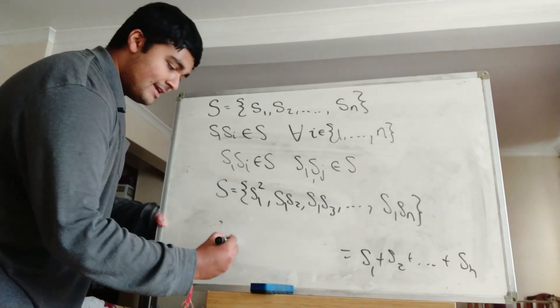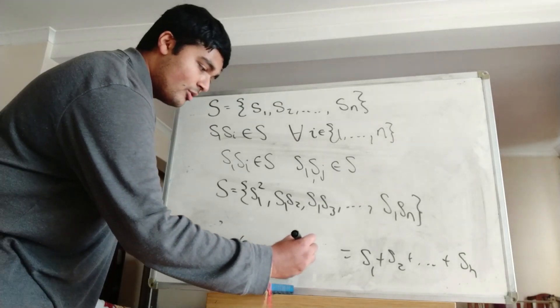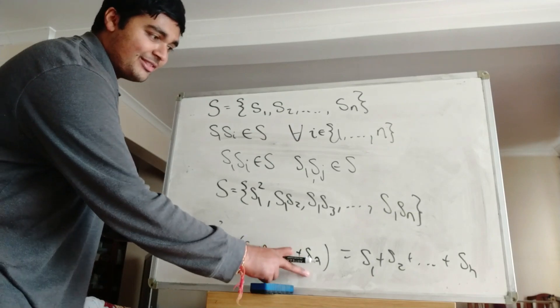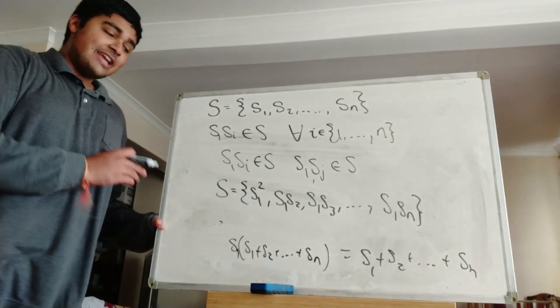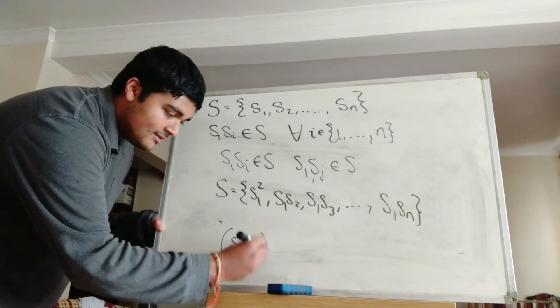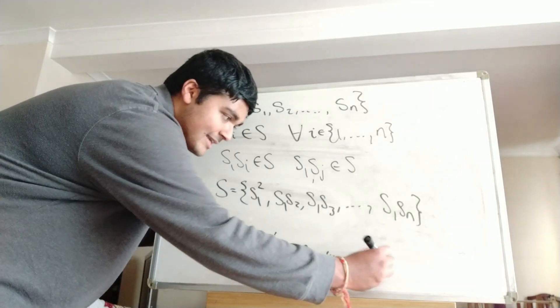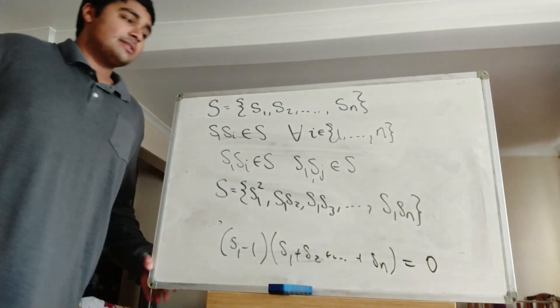So this thing here is simply S1 times S1 plus S2 plus so on, all the way up to SN. But then I've got this guy on this side and this guy on this side, so I can bring everything onto one side and simply get (S1 minus 1) times (S1 plus S2 plus so on, all the way up to SN), this guy here equals 0.